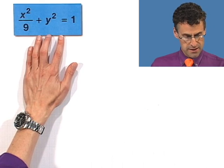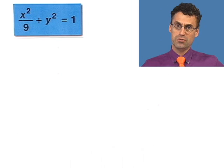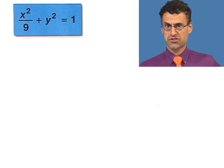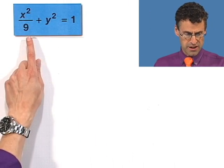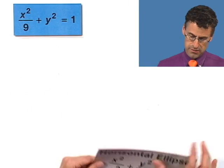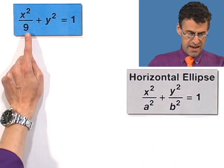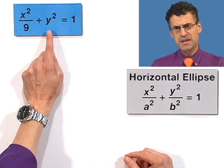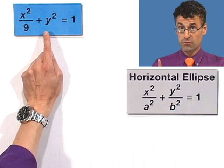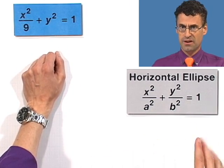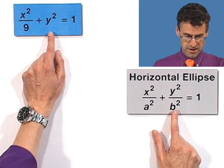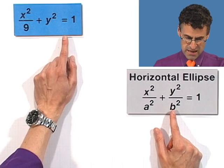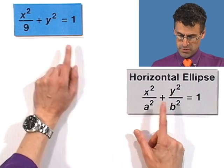Let's jump right to an example so you can see these things in practice, because they're really fun to look at. Here's a pretty equation for an ellipse. I realize this is a horizontal ellipse. The A squared is 9, which means A is 3. And there's an invisible denominator of 1 for the Y squared term, so B squared is 1, meaning B is 1. Since 3 is bigger than 1, this is going to be a horizontal ellipse.